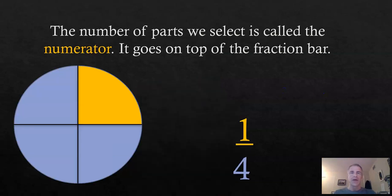So, the number of parts that we select, like that one that we selected in the previous slide, that's called the numerator. That's that yellow piece in the purple circle there. That's called the numerator. That number goes on the top part of the fraction bar. See where that yellow one is? That's the numerator. That shows how many pieces out of the whole that we're talking about, okay?